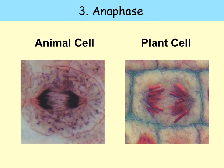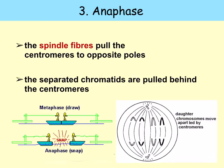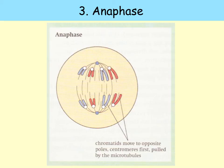Anaphase — here's anaphase in a plant and animal cell. This stage is very rapid, and the centromeres split into two. The spindle fibres pull the centromeres to opposite poles, and the separated chromatids are pulled behind the centromeres. It's like the diagram of two men in boats sitting back to back who get pulled apart during anaphase — the chromatids follow the centromeres, and the centromeres are being pulled along by the spindles. The chromatids move to opposite poles, centromeres first, pulled by the microtubules.